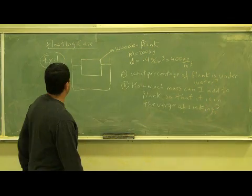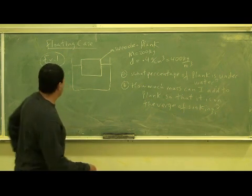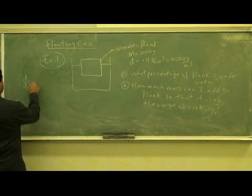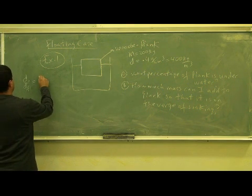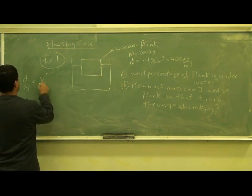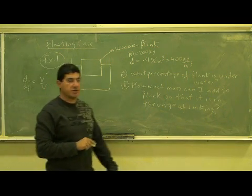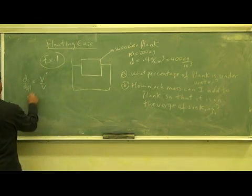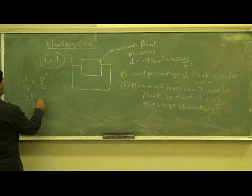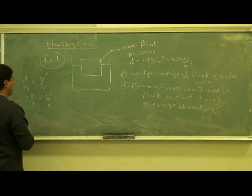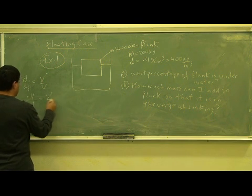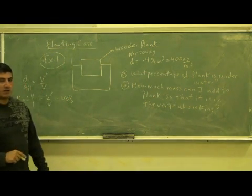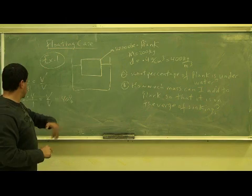Remember the equation I derived: the density of the object divided by the density of the fluid equals V-prime over V. In this case, the density of the object is 0.4 grams per cubic centimeter and the water is 1, so 0.4 over 1 equals V-prime over V. That gives a ratio of 0.4 — so 40% of the plank is submerged underneath the water.